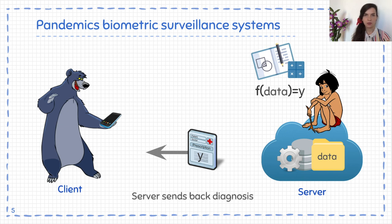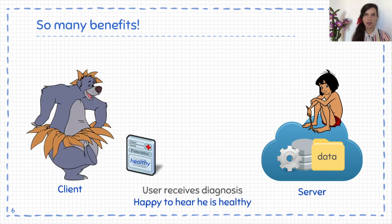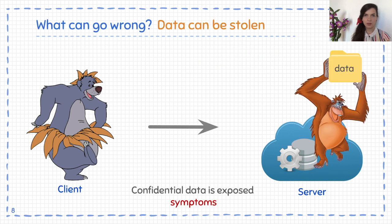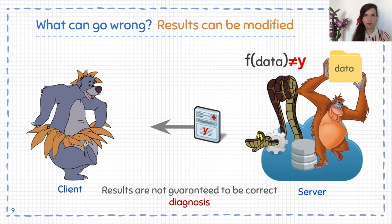So Baloo is able to learn if he is sick and he enjoys all the benefits of this solution without thinking about the risks he can run through. Of course, Mowgli can get corrupted and things can go wrong. The data is completely exposed to the server and it can get stolen, and also the results of the diagnosis are not guaranteed to be correct.